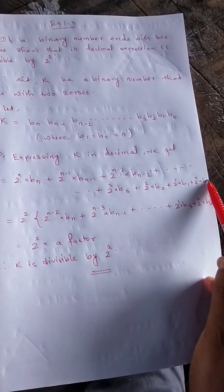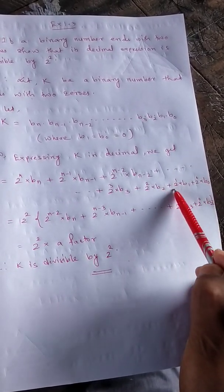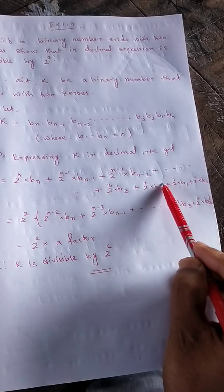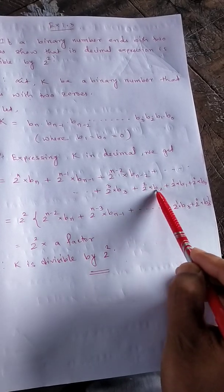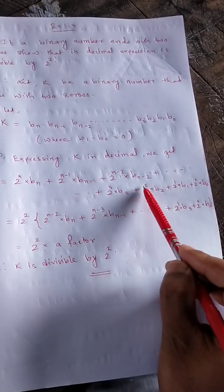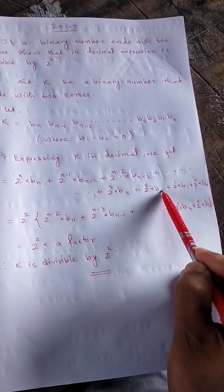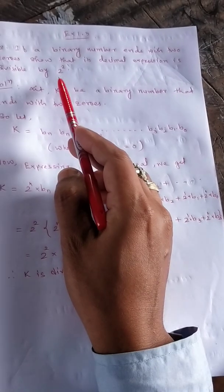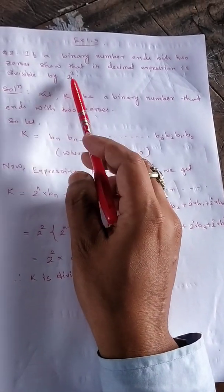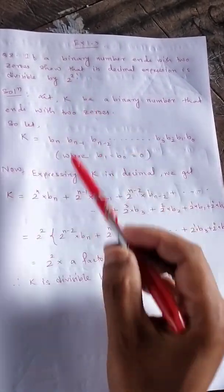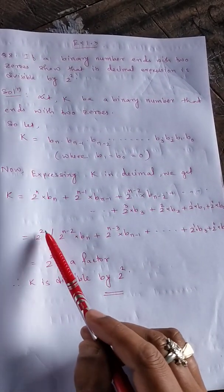Since b_1 and b_0 are both zero, those two terms vanish. So our number k is expressed only up to the b_2 term, meaning the lowest remaining term is 2² times b_2.